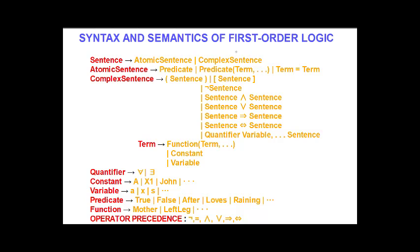Now we start with the syntax and semantics of first order logic. A sentence in first order logic can be an atomic sentence or a complex sentence. An atomic sentence consists of a predicate, which may be true or false and may contain terms — terms can be functions, constants, or variables. Complex sentences are formed by combining sentences with logical operators: negation, and, or, implication, biconditional, and we also have quantifiers which we will see shortly.